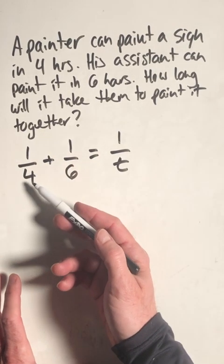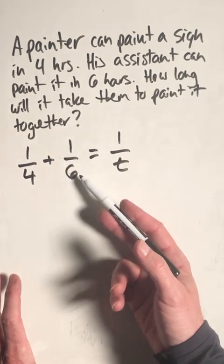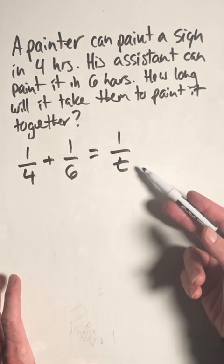So we're going to take one over four, the first rate, one room in four hours, plus one room in six hours, will equal one room in how many hours?